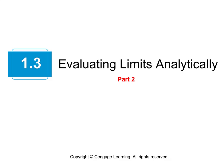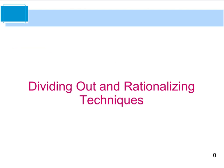Hello, and welcome back to the second part of section 1.3, where we're dealing with evaluating limits analytically. If you recall from the first part, we were talking about what happens when we go to use direct substitution for solving limits and it doesn't work. Specifically, if we get that 0 over 0 instance, which is called the indeterminate form. So, two of the methods that we can use would be dividing out and rationalizing techniques.